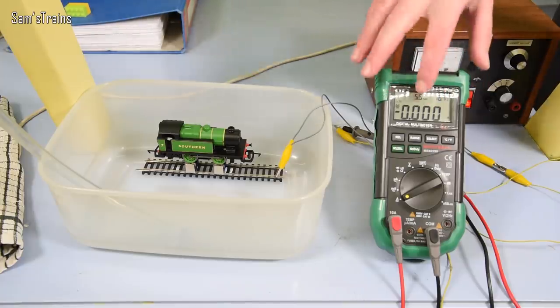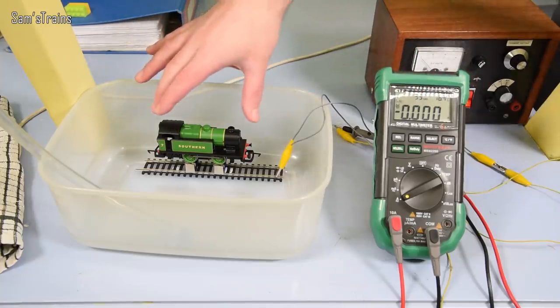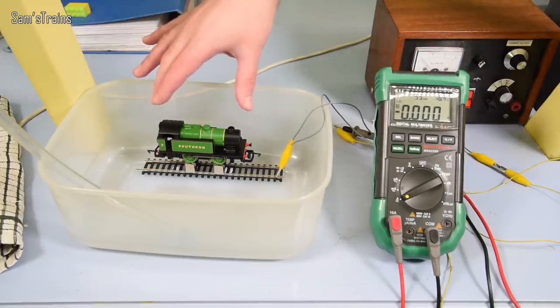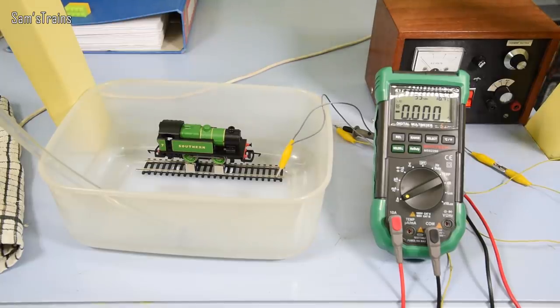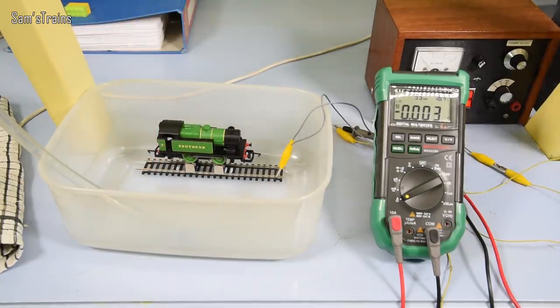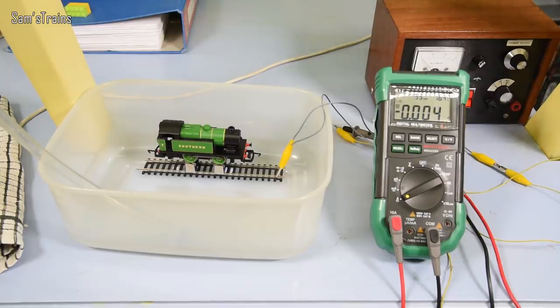So basically the higher the number on here, the more power this is drawing and the harder it's having to work. If this number goes down at any point, that means that less power is going through the loco or it's not having to work as hard. That also could be caused by a bad connection or something like that. So I've thought long and hard about how I'm going to actually do this.